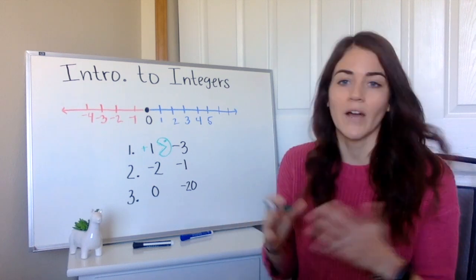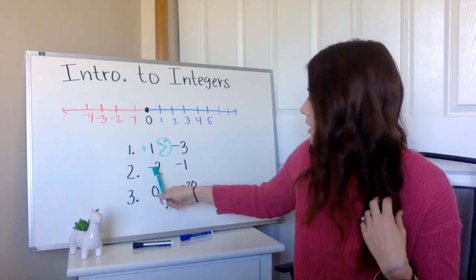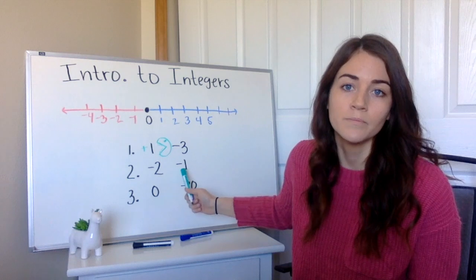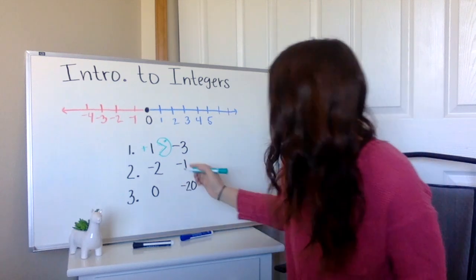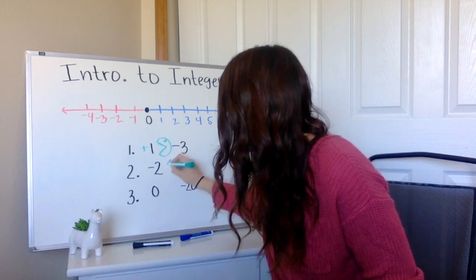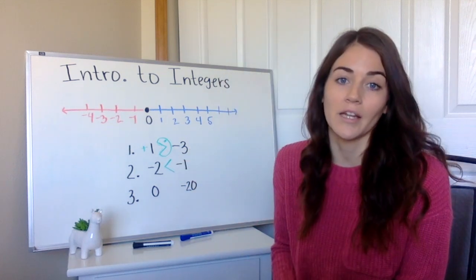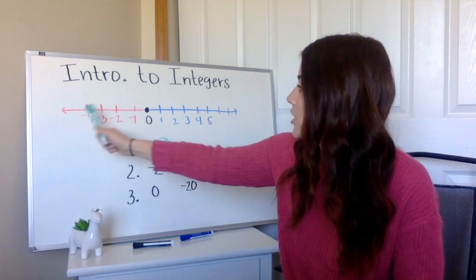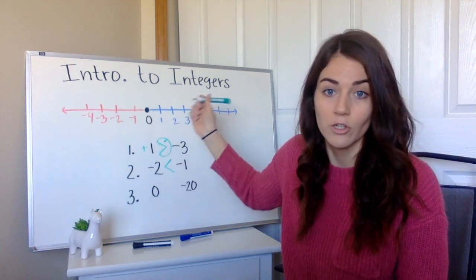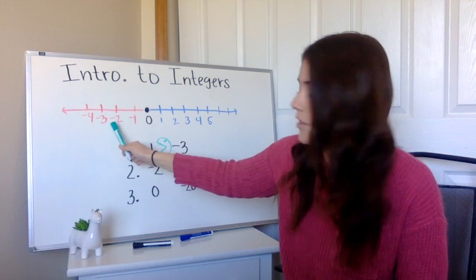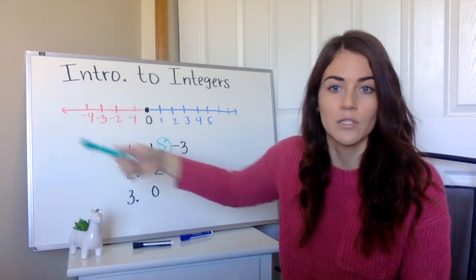So I know if I were looking at these as positives, that two would be bigger than one. But since they're negatives and they're the opposite, we know negative one is going to be bigger than negative two. And if we're looking at our number line, we can see that negative one is further to the right, closer to our bigger numbers than negative two. Negative two is closer to our smaller numbers.